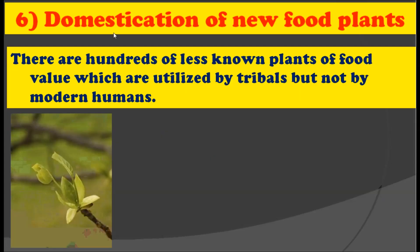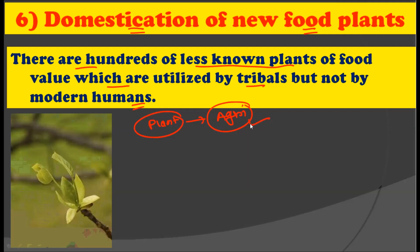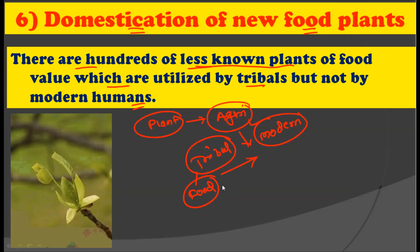The next application of ethnobotany is the domestication of new food products. There are hundreds of lesser-known plants of food value used by tribal peoples but not by modern humans. There are many plant species used today as domesticated agricultural species, but these are only a few. Many other plants, not known to modern humans, are used by tribal peoples to fulfill their food requirements. By studying ethnobotany, we can come to know many plants that can also be used as food by modern humans.